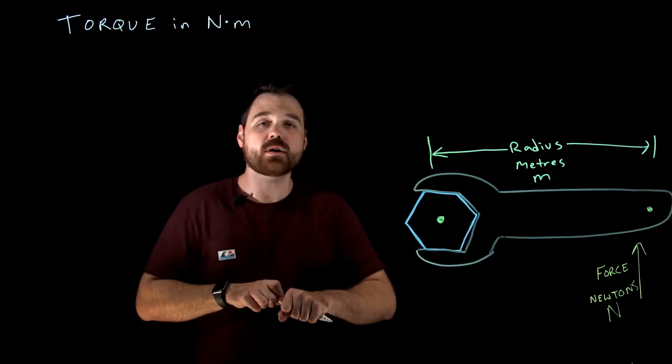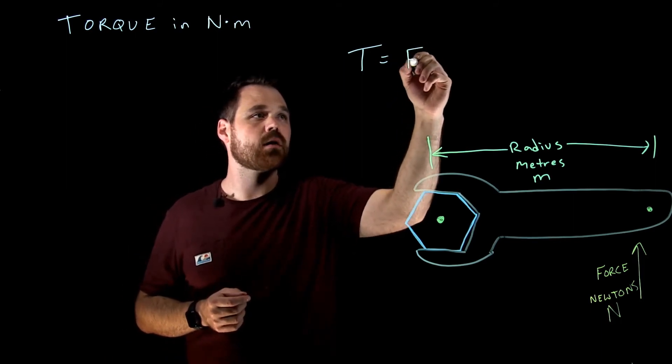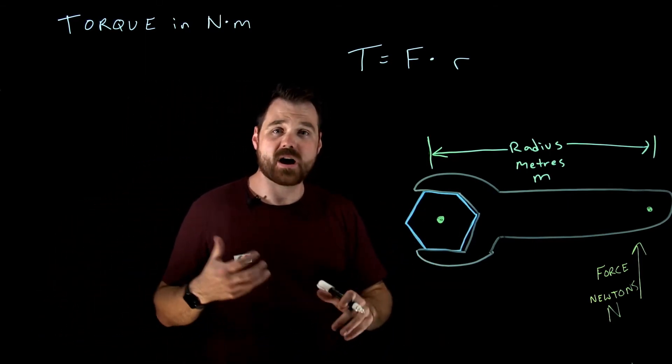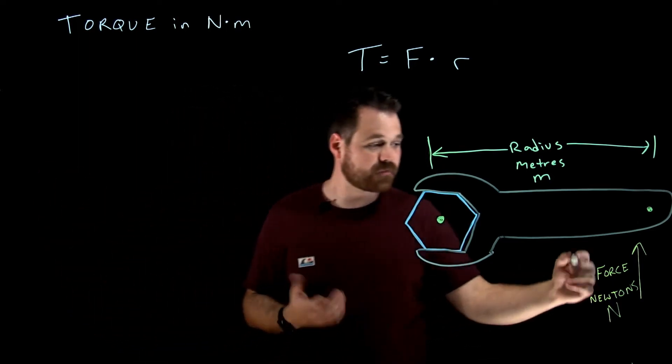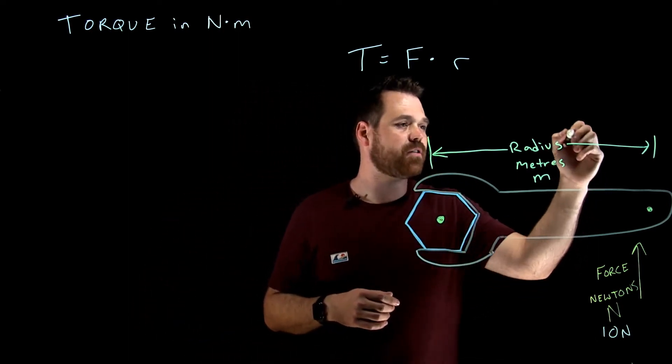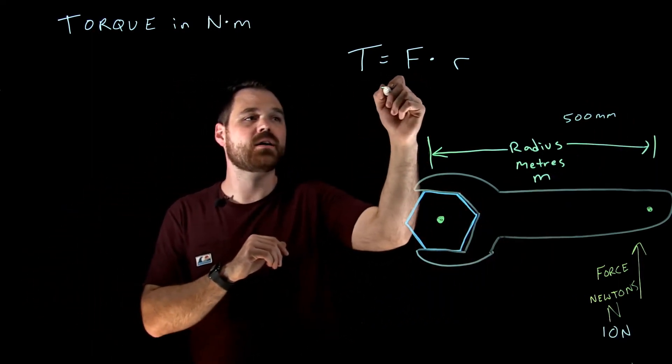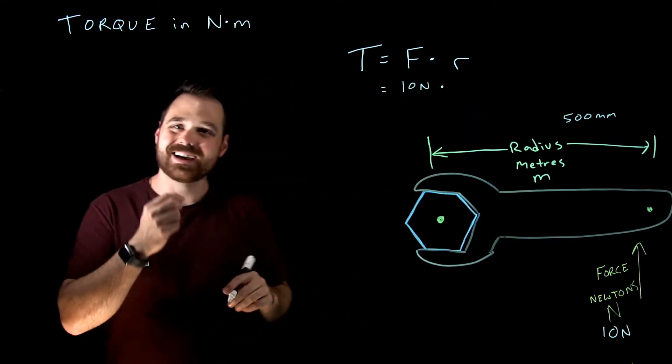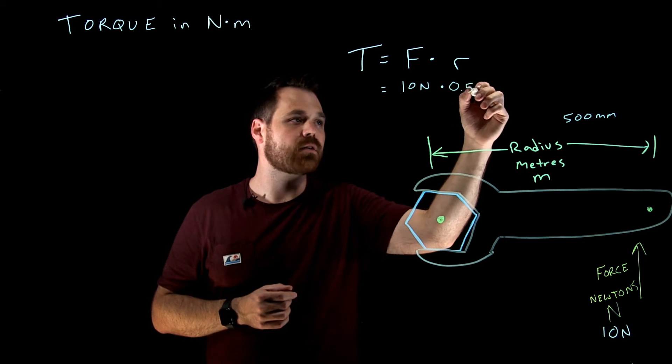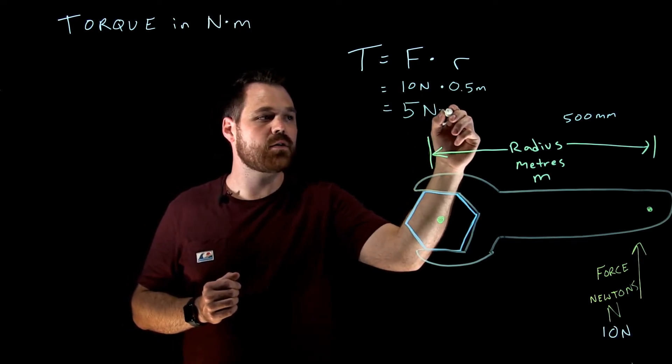How this works out is our torque is a product of our force times our radius. Torque equals force times radius. Taking that into account, hypothetically if we had a force of 10 Newtons and we had a radius of 500 millimeters, we would take that and punch it into our formula: 10 Newtons times, and now we need to convert this into meters because our radius is in meters, so in this case it would be 0.5 meters.